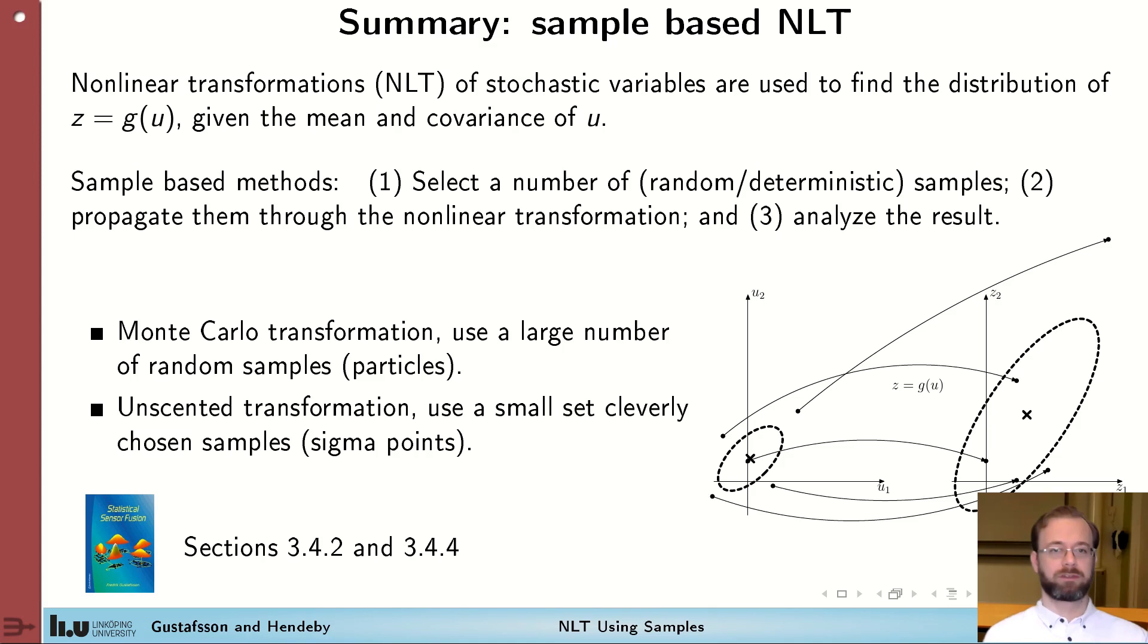Let's summarize. We have looked at nonlinear transformations of stochastic variables. That is the problem of approximating the mean and covariance of z, which is a function g of a variable u that we know the mean and covariance of. To do this using sample-based methods involves selecting samples to represent u, propagate this through a nonlinearity, and then analyze the result. This can be done either using Monte Carlo transformation, where a large number of random samples are used, or using the unscented transform, which relies on a number of deterministically chosen points to well represent the distribution. Read more about this in section 3.4.2 and 3.4.4 in the textbook.